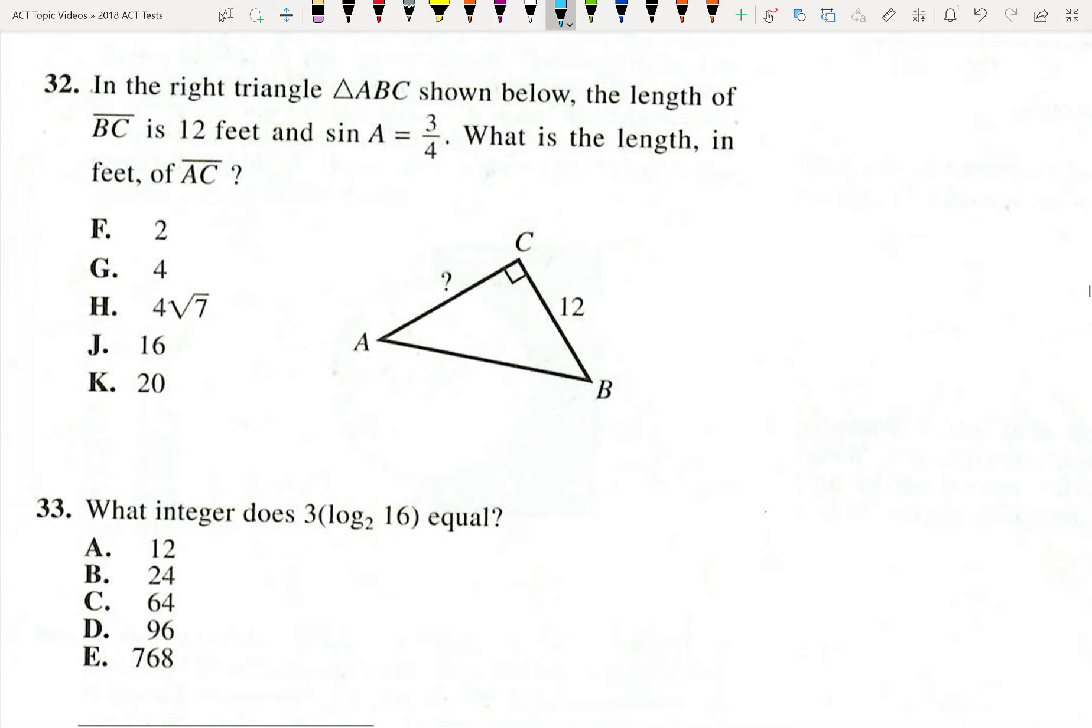They want to know what the length of AC is, and they told me that sine of A is 3 over 4. So sine is opposite over the hypotenuse. Okay, well that means that the ratio of this to this is 3 to 4.